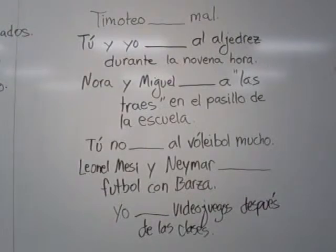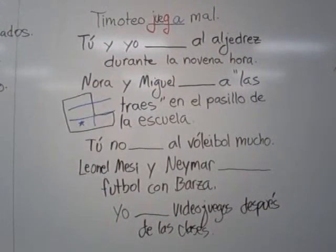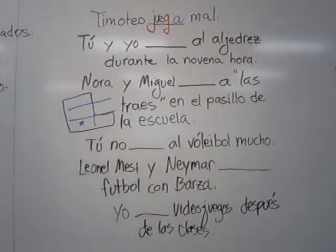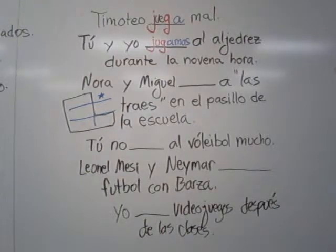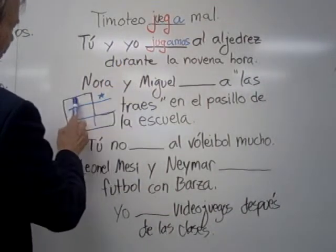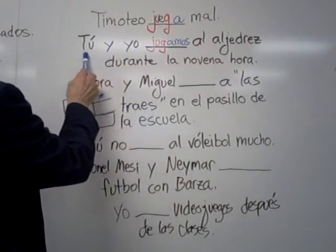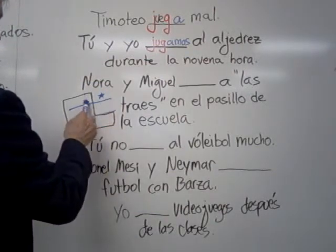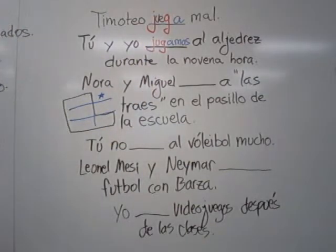Welcome back. Let's see how you did on these. Timoteo juega mal — Tim plays badly. Notice it is a UE stem change. Timoteo is one guy and it comes from the lower left. Tú y yo jugamos al ajedrez durante la novena hora — you and I play chess during ninth hour. It is jugamos. We start with yo, and we have another person with us, so we move from the singular side to the plural side — nosotros. And it is outside the boot, so the stem does not change.